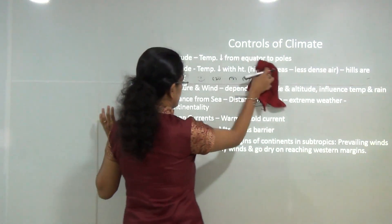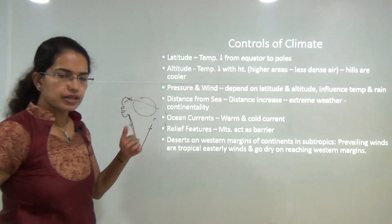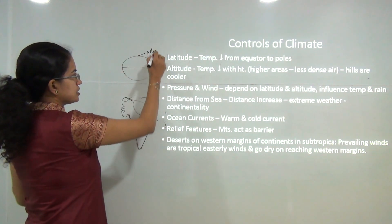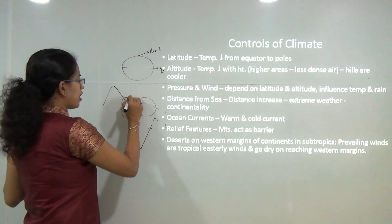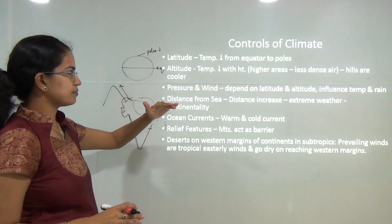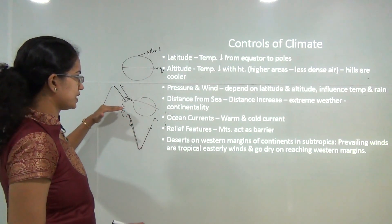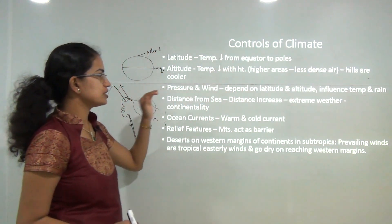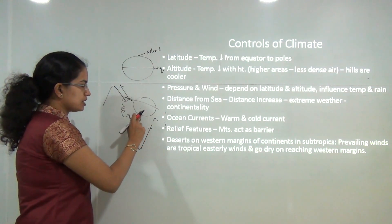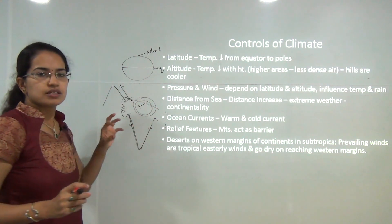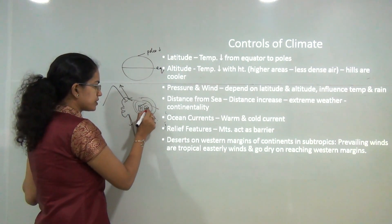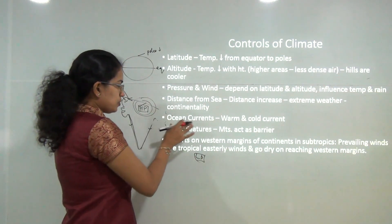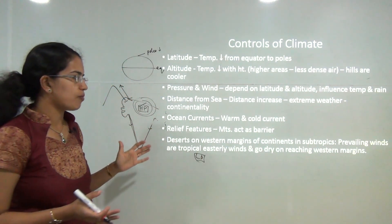There are various controls of climate. First is latitude — from the equator to the poles, temperature decreases, with the equator being the hottest. Then altitude — temperature drops at higher elevations as air is less dense. Pressure and wind depend on latitude and altitude, and they influence temperature and rainfall. Distance from the sea increases continentality, leading to more extreme pressure differences.